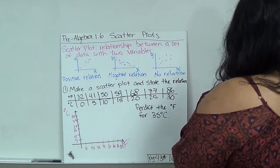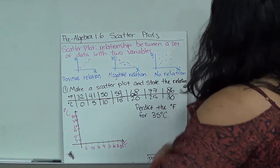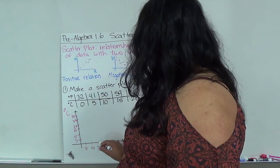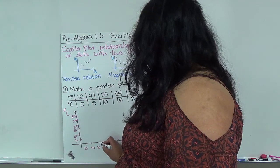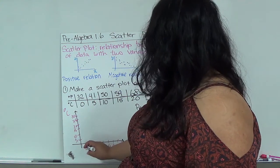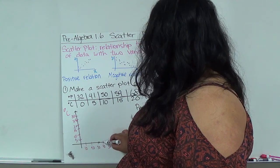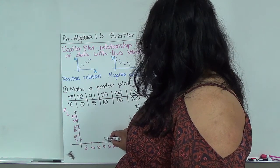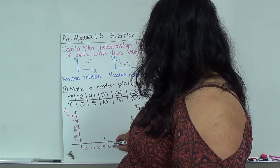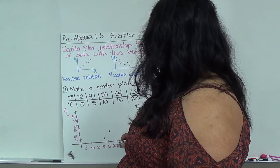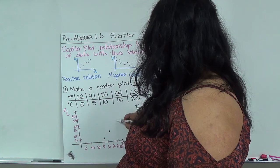We're going to plot. The first one is 32, 0, so I don't go up at all. The next one is 41 up 5. The next one is 50 up 10. The next one is 68 up 20.